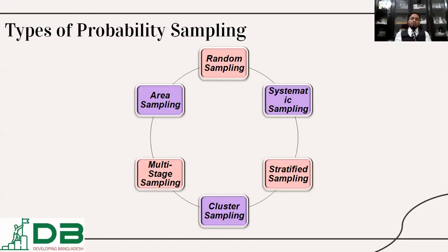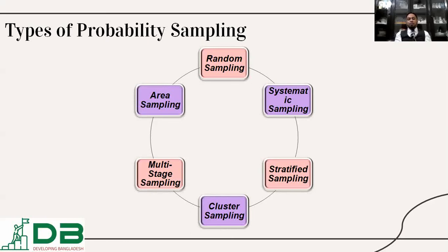Stratified sampling is the technique where we divide the total population into several strata and from each stratum we select some samples randomly. This can also be termed double-stage sampling, because the first stage is stratifying and dividing into strata, and the second stage is randomly selecting from each of the strata or groups.